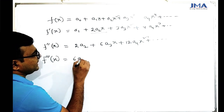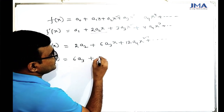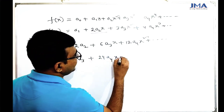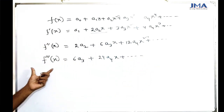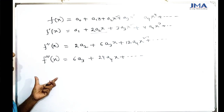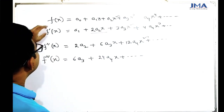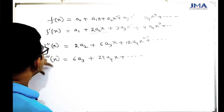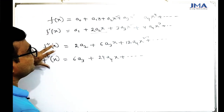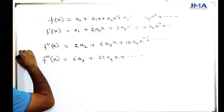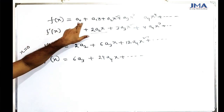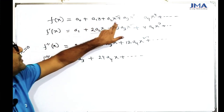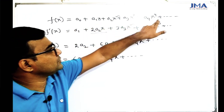We get: 6·a3 plus terms involving a4 and higher. The value of x equals 0, so each coefficient value is found by substituting x equals 0, giving us the result of zero for many terms.